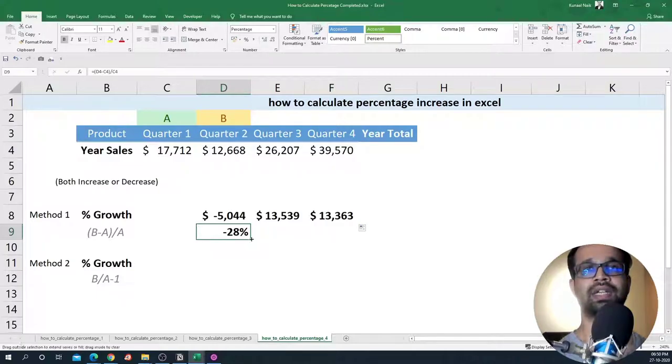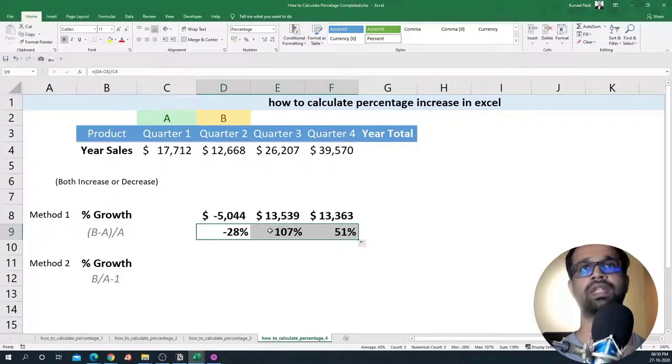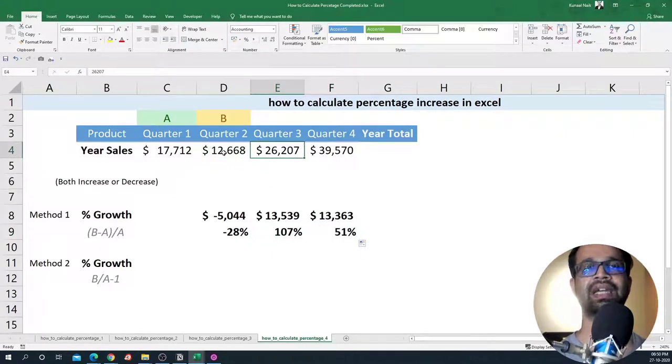So if I just copy the formula to the right hand side, you'll notice that we will see growth percentage. So from 12k to 26k, it's doubled and so we are seeing 107 percentage.